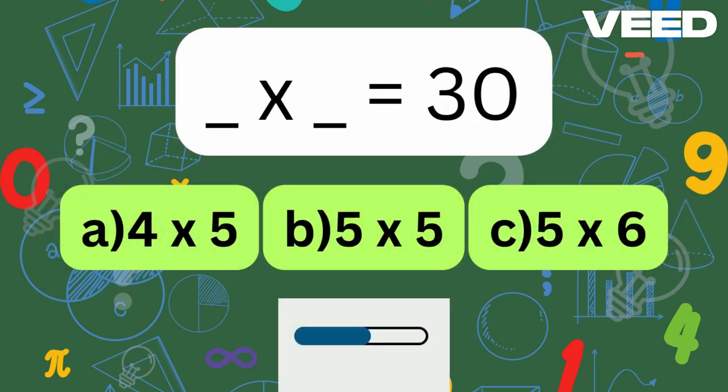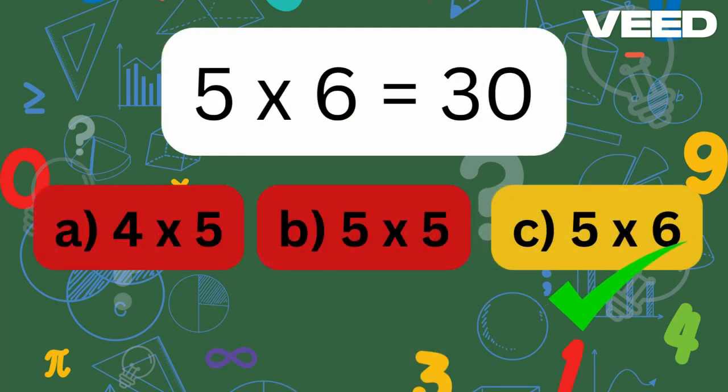What times what equals 30? Yes, 5 times 6 is equal to 30.